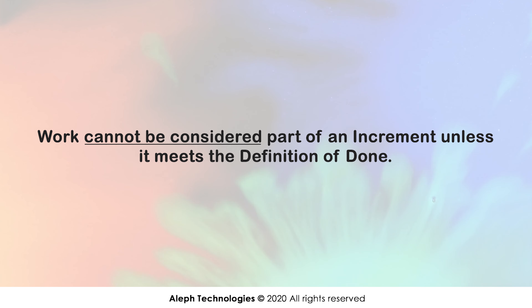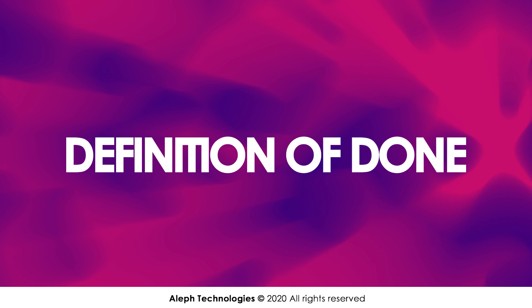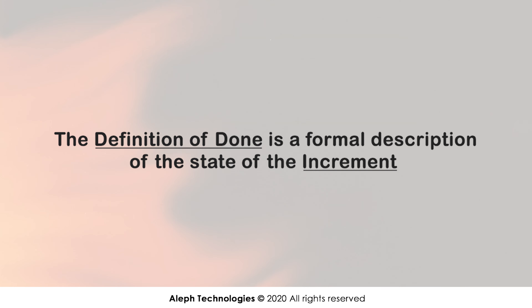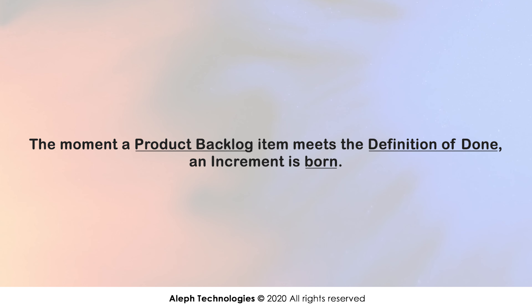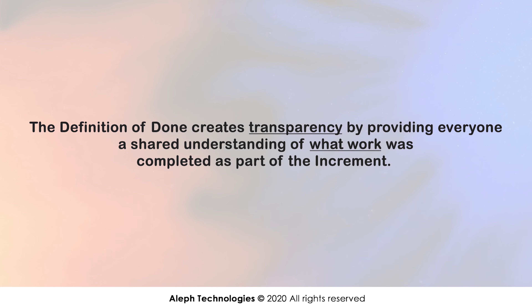Commitment: Definition of Done. The definition of done is the formal description of the state of the increment when it meets the quality measures required for the product. The moment a backlog item meets the definition of done, an increment is formed. The definition of done creates transparency by providing everyone a shared understanding of what work was completed as part of the increment.